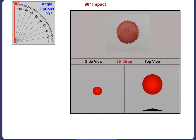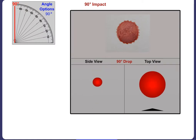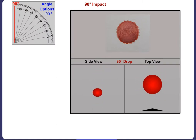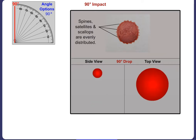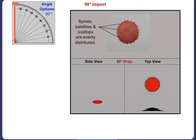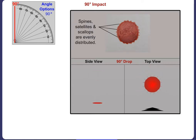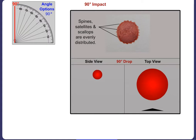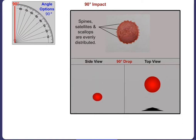When a blood droplet strikes a smooth surface at a 90 degree angle, the resulting stain will be circular. The spines, satellites and scallops will occur in a moderate to even pattern around the stain. There will be very little difference in stain shape for angles of impact between 60 and 90 degrees.